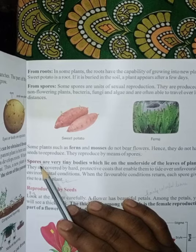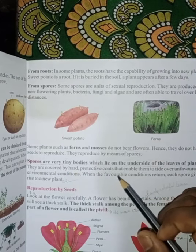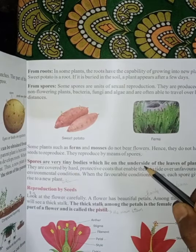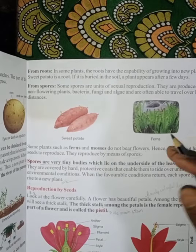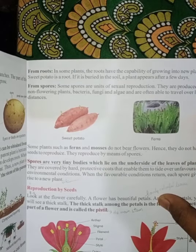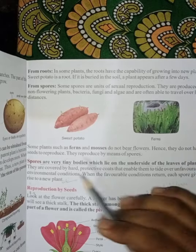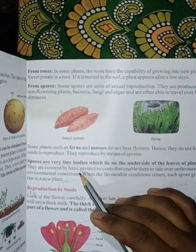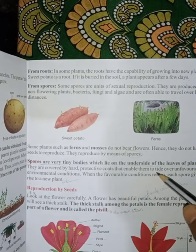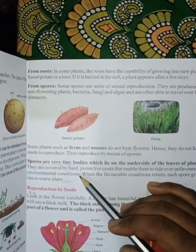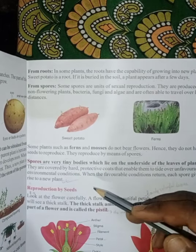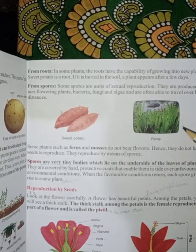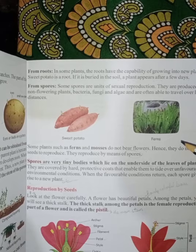What are spores? Spores are the very tiny bodies which lie on the underside of the leaves. They are covered by very hard protective coats that enable them to survive over unfavorable environmental conditions. When favorable conditions come, the spores fall down to the ground and new plants rise.